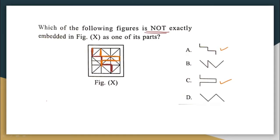Let us try to spot option D. Where is option D? Here. Option D is also embedded in the given figure. So which is the option that is not embedded in the given figure? It is option B. Option B is not embedded — we are not able to find it. Option A is there, option C is there, and option D is also there. Your correct answer here is option B.